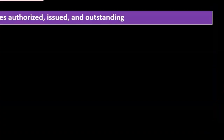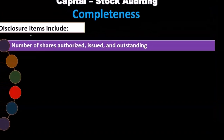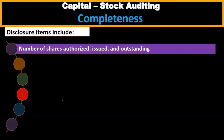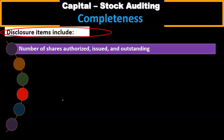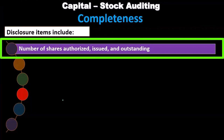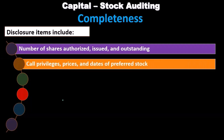Now we're going to consider completeness disclosure items. The disclosure items we need to include are the number of shares authorized, issued, and outstanding.